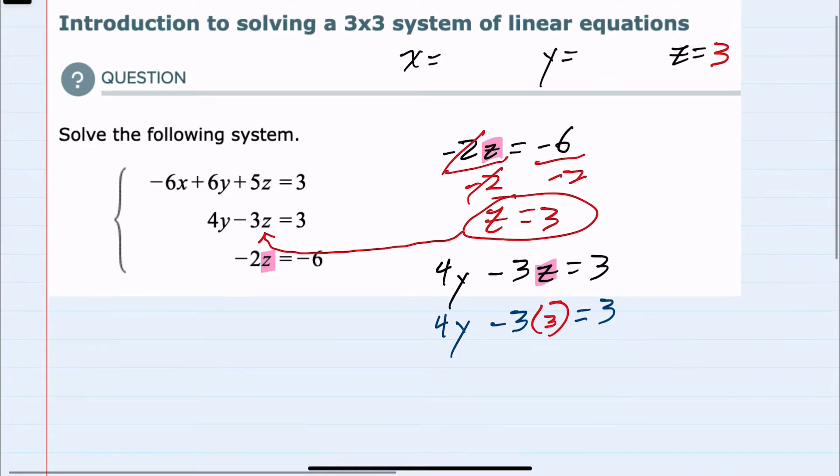Continuing to solve, I can simplify the left-hand side by doing that multiplication. So 4y minus 3 times 3 is a minus 9 equals 3 on the right.